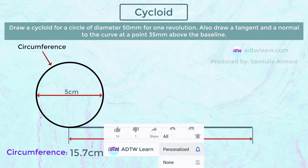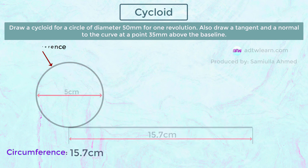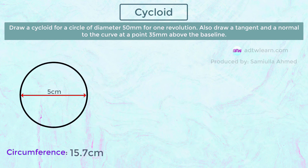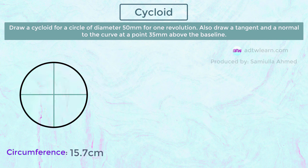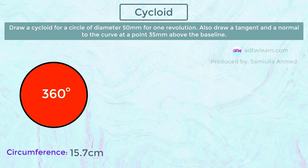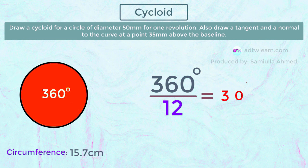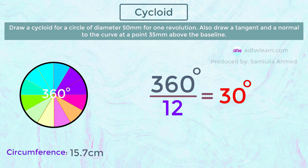First we draw a circle of 5 centimeters in diameter, then draw horizontal and vertical diameters on the circle. To draw a cycloid we will divide the circle into 12 parts — the more parts we draw the smoother the curve, but the time for drawing increases. To get 12 equal parts we do 360 divided by 12, which gives 30 degrees. There will be 12 sectors of 30 degrees each.